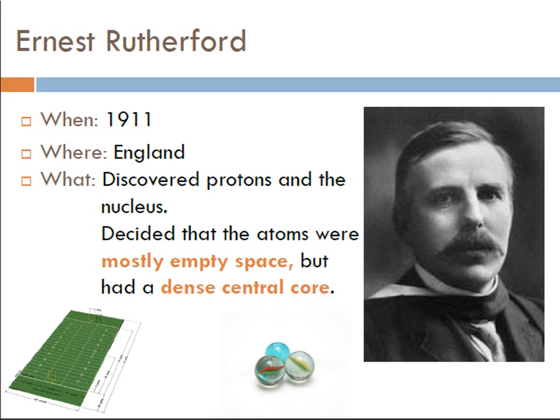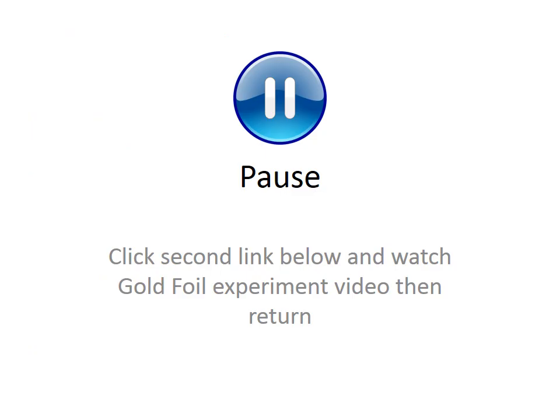The next person who contributed to the atomic model is Ernest Rutherford in 1911 in England. JJ Thomson had discovered the negative electron but couldn't figure out the positive part — that's what Rutherford did. He discovered the proton, which is positive, and the nucleus. He also decided that atoms were mostly empty space but had a dense central core. Pause this video and click the second link titled gold foil experiment to watch how he made this discovery.